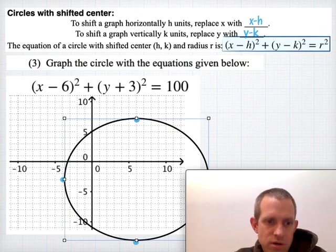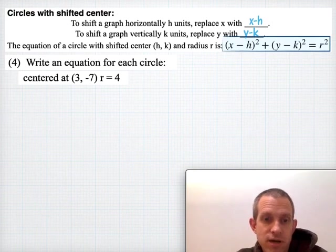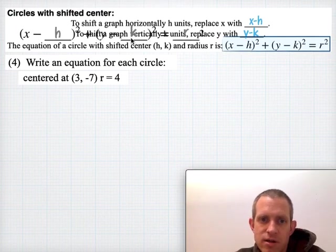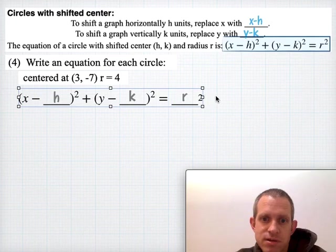What if we need to write an equation for a circle? We need a template. The template is still x² and y² and r², but instead of just x we're going to subtract something from x, we're going to subtract something from y. So I like to use this: (x - something)² + (y - something)² = something².